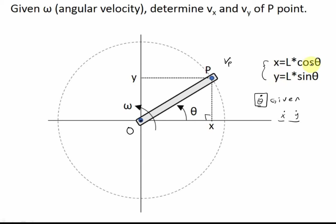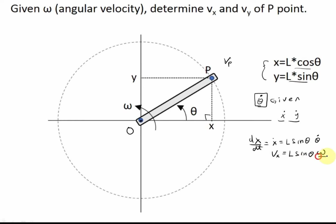X and Y relate to theta through this geometric configuration. So if you take the derivative — meaning dx/dt, which is X-dot — you get negative L sine theta times theta-dot. So the X component of velocity is related to omega. Given omega, you can get Vx, or given Vx, you can get omega. First configure the geometric relationships, then take derivatives to relate the velocities of the parts of the body.